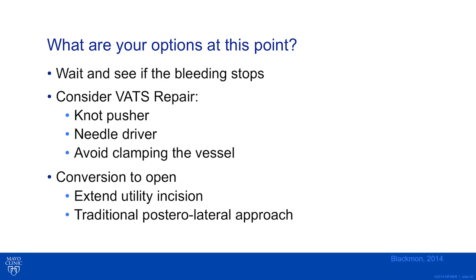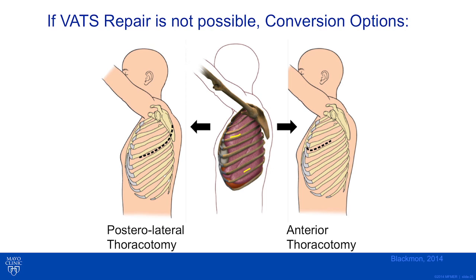Initially, if you can compress the lung and stop all bleeding, you can simply wait and see if bleeding stops by re-examining the area. You can consider a VATS repair if visualization is excellent and bleeding can be controlled. When performing a VATS repair, using a knot pusher and needle driver will enhance your ability to close the vessel. It is important not to pull up and cause the tear to be larger, and always avoid clamping the vessel. If VATS repair is not possible, open options include extension of the anterior thoracotomy or creation of a separate posterolateral thoracotomy.